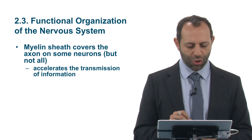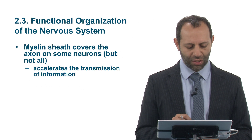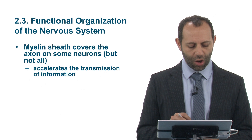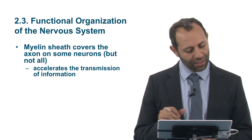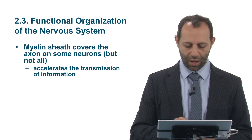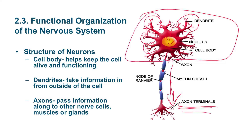Another important feature of the neuron is the myelin sheath. The myelin sheath covers the axon on some neurons, not necessarily all. The purpose of the myelin sheath is like the covering you might find on an electrical wire — it's meant to insulate the communication and transmission of electrical impulses along the axon, so that information travels in a rapid and efficient manner.